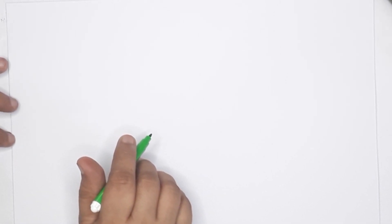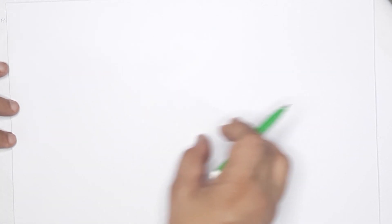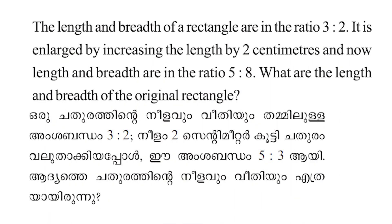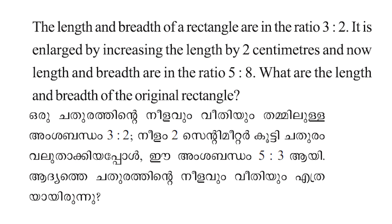Now here is the next topic: changing relations. How do we change relations? The ratio will change. The length and breadth of a rectangle are in the ratio 3 is to 2. It is enlarged by increasing the length by 2 centimeters, and now the length and breadth are in the ratio 5 is to 3. What are the length and breadth of the original rectangle?